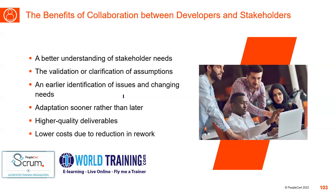The next point is higher quality deliverables. When we have better collaboration between developers and stakeholders, it certainly results in higher overall quality of deliverables. It also results in lower overall cost because there is less rework required. The cost can reduce, and reduction in rework also enhances better collaboration for the future. The focus is on how we can achieve lower cost through reduction in rework between stakeholders and the development team.